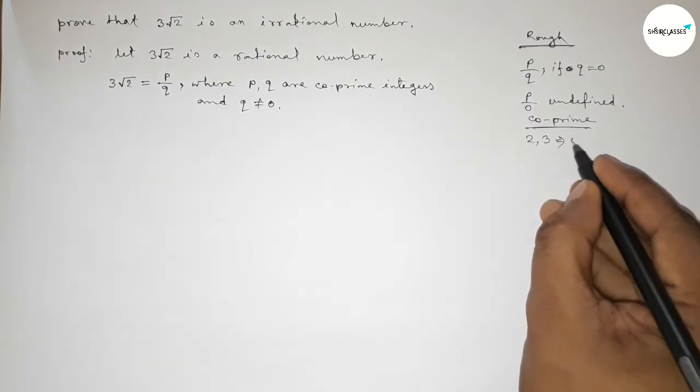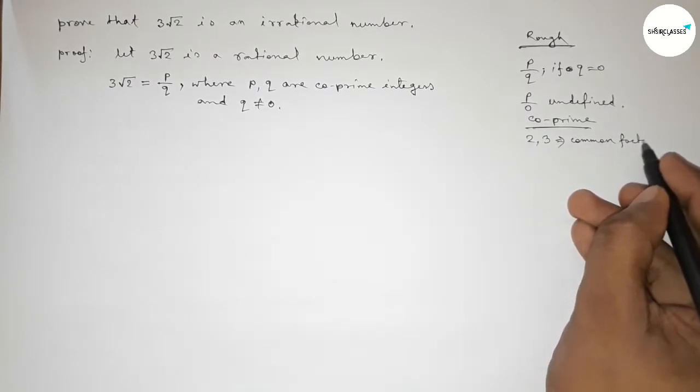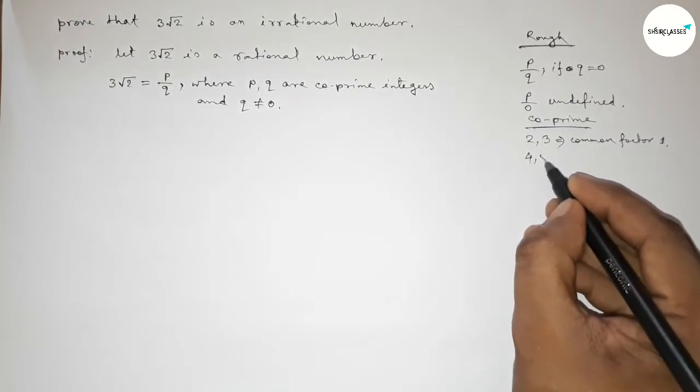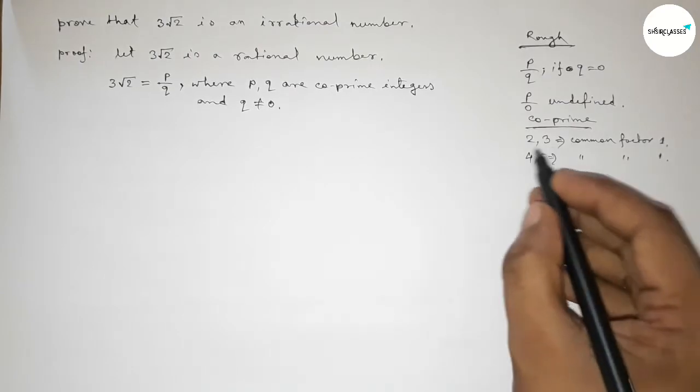Now discussing coprime numbers. If you take 2 and 3, the common factor between 2 and 3 is only 1. Taking another example to clear the concept: if you take 4 and 5, the common factor between 4 and 5 is only 1. So p, q are coprime numbers.